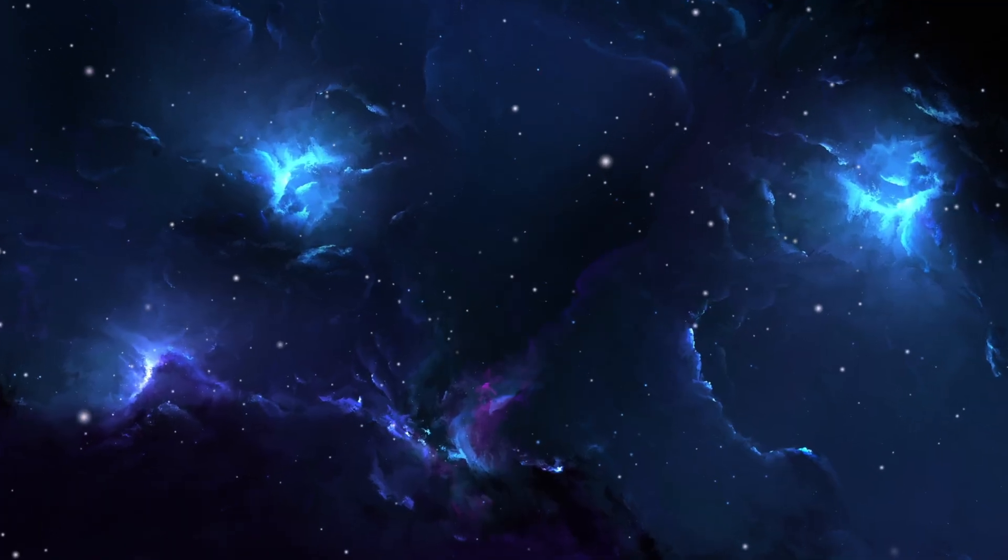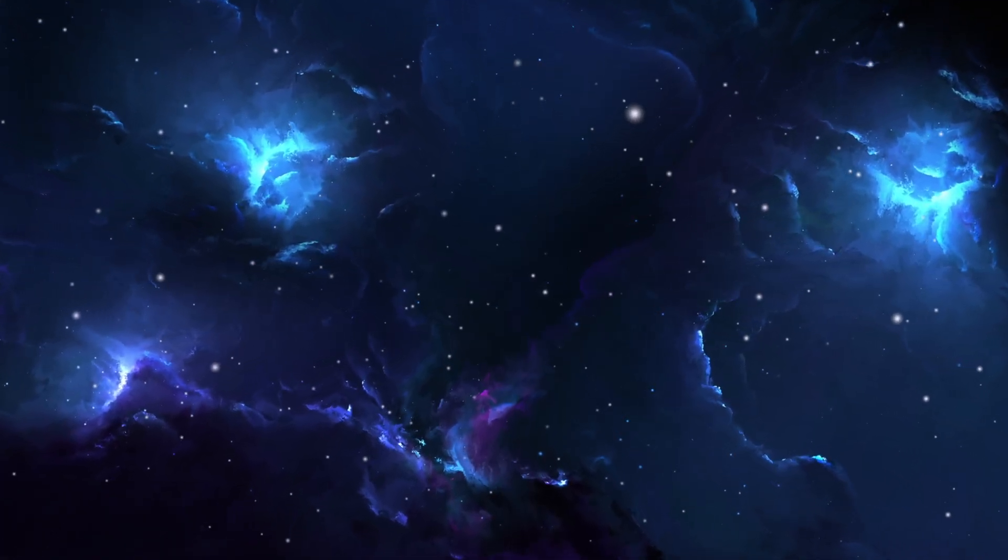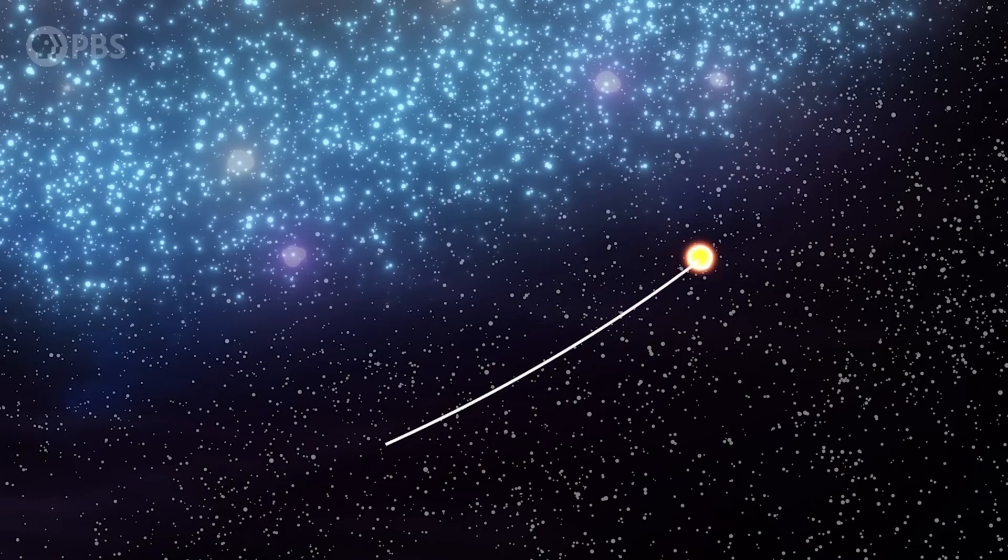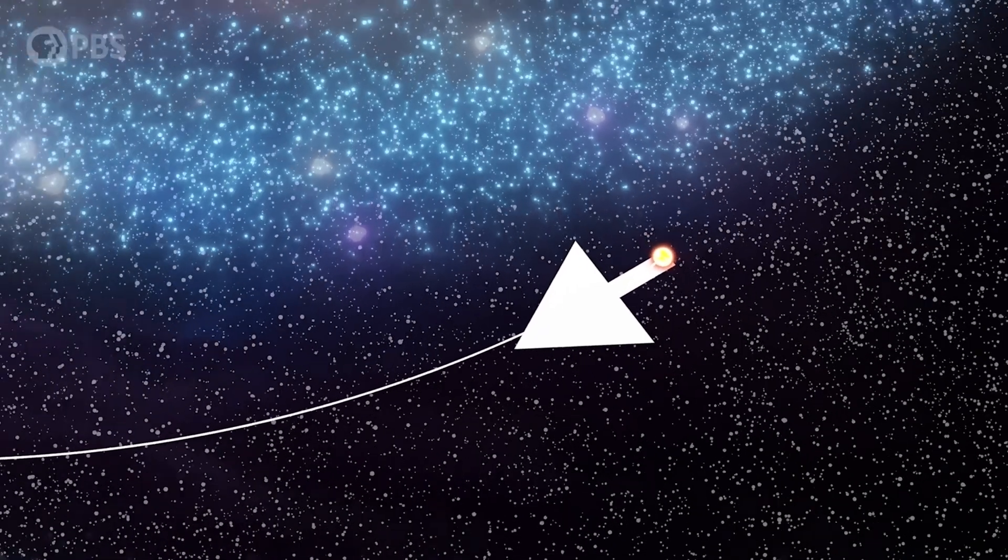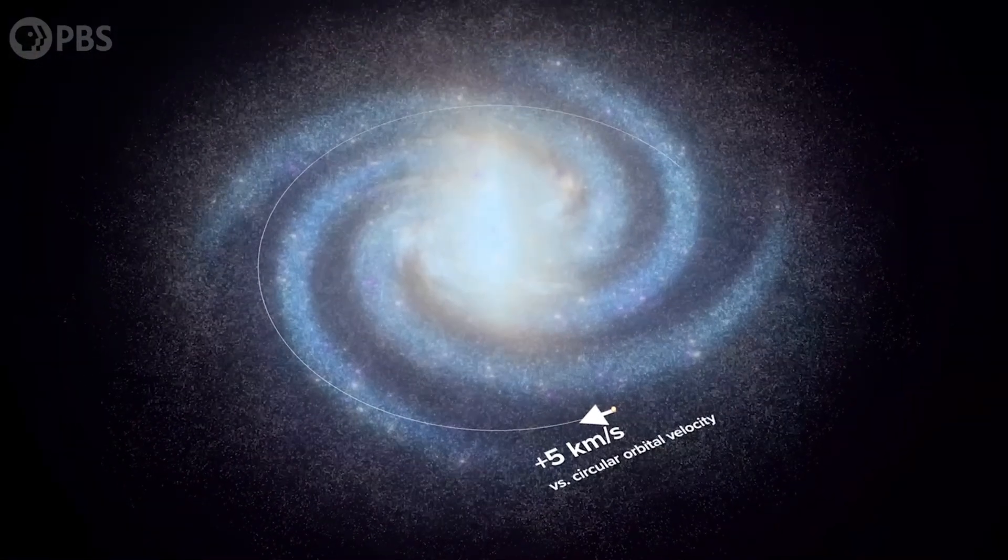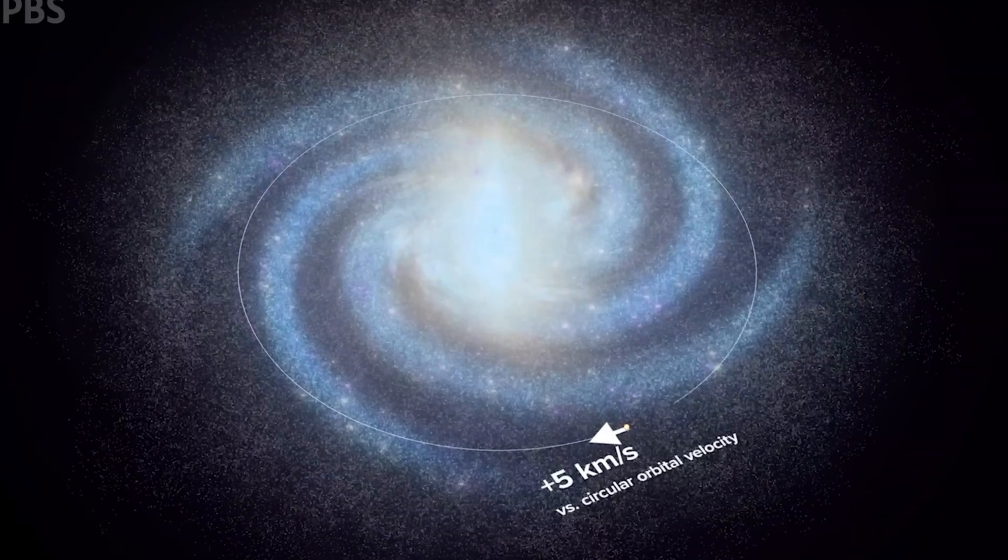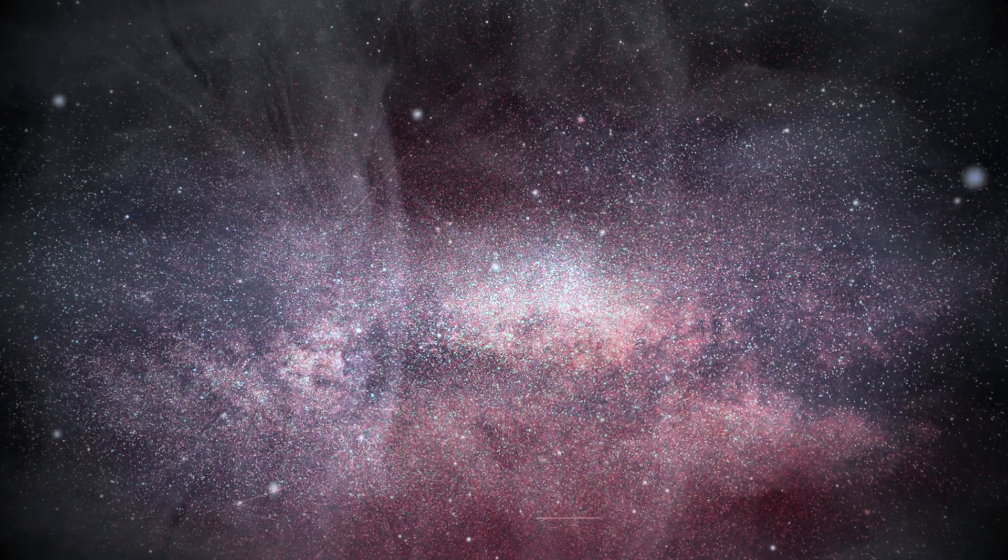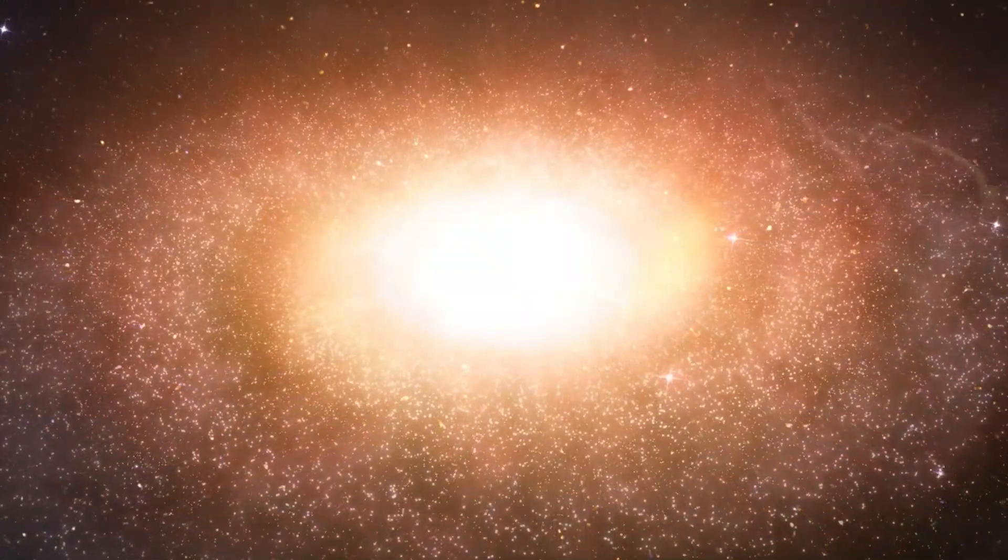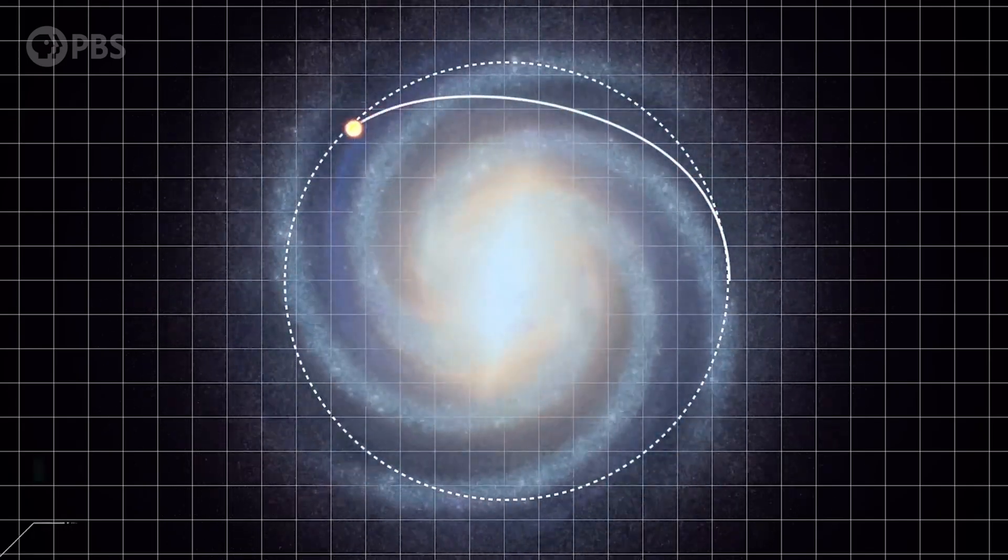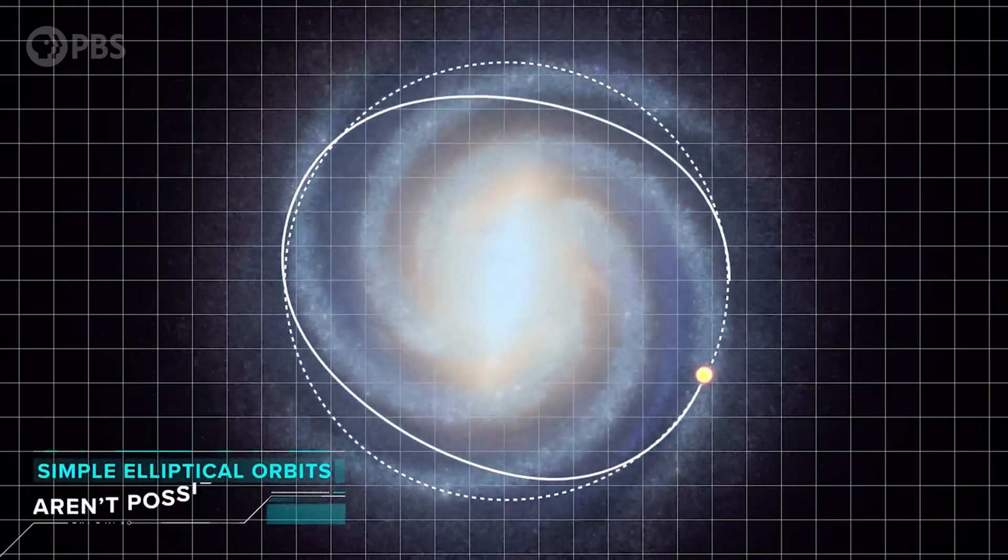For starters, this slow drift toward the galactic center doesn't mean we're going to fall into Sagittarius A. The Sun is trying to execute a slightly elliptical orbit around the galaxy, and currently, it's moving closer to the galactic center. But the Milky Way's mass is spread out through the entire galaxy, rather than concentrated in the center like in the solar system. That means simple elliptical orbits aren't possible. Instead, the Sun traces out this pretty flower pattern over many orbits.